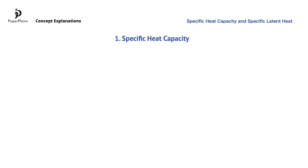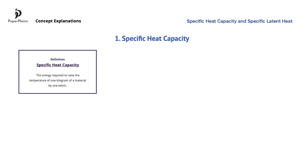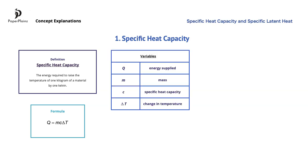Specific heat capacity is defined as the energy required to raise the temperature of one kilogram of a material by one Kelvin. Since a change of one Kelvin is equal to a change of one Celsius, we could replace Kelvin here by degree Celsius. Here is the formula that includes specific heat capacity and here are the variables in this formula. When we rearrange this equation for C, we get Q over m times delta T. From this it follows that the unit of specific heat capacity is joules per kilogram per Kelvin.